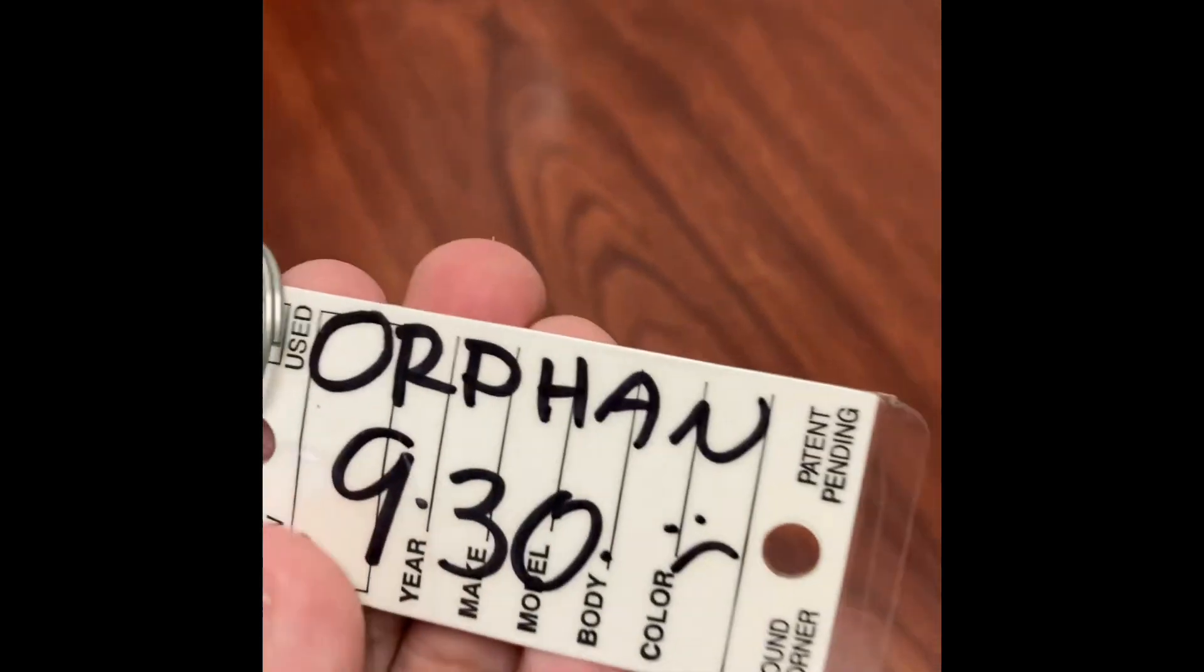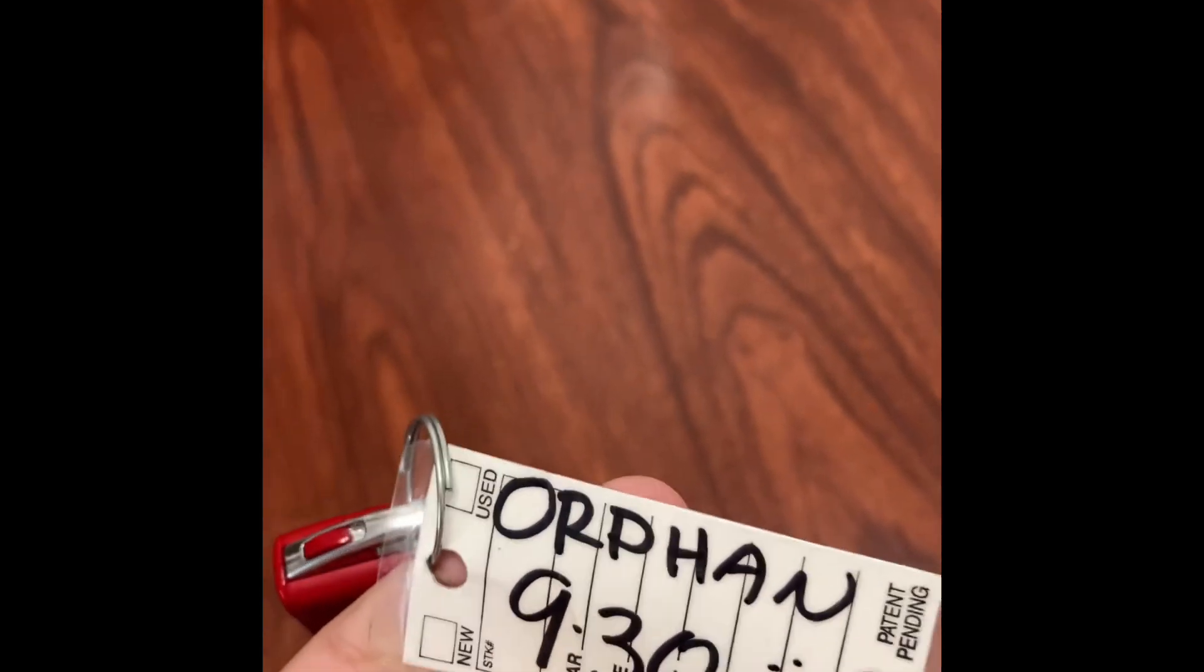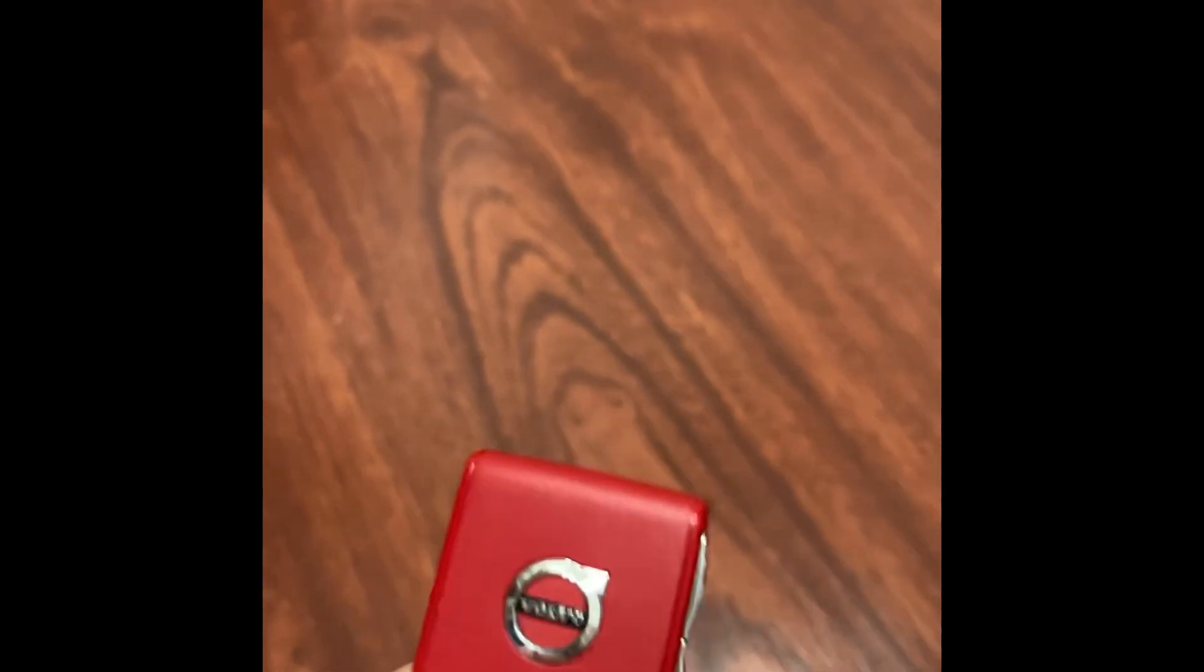Not exactly sure what it goes to though, even though it has a tag. I call it an orphan key. What that means is that it doesn't go to any specific kind of Volvo.